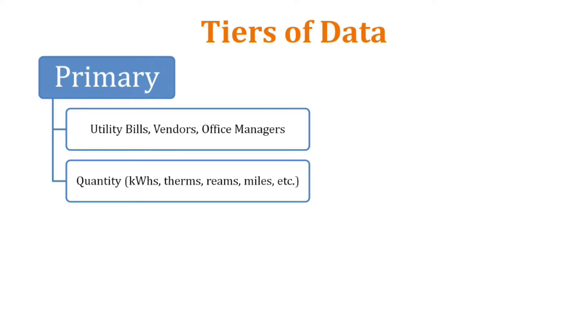Primary data will show the quantity being used — whether it's kilowatts, therms, reams or sheets of paper, or business travel miles. And of course, you can also get the costs of that too.